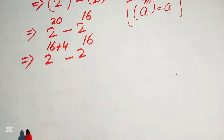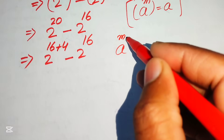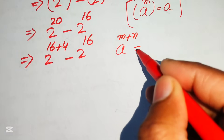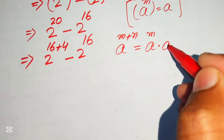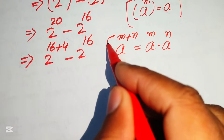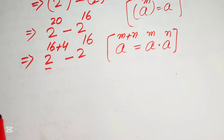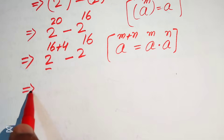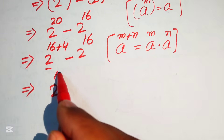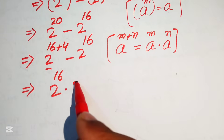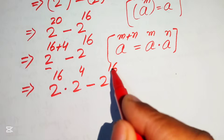Now we need another exponential law: a to the power of m plus n equals a to the power of m multiplied by a to the power of n. We apply this to the first term, writing it as 2 to the power of 16 multiplied by 2 to the power of 4, minus 2 to the power of 16.